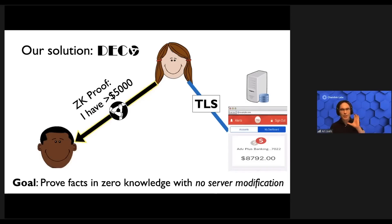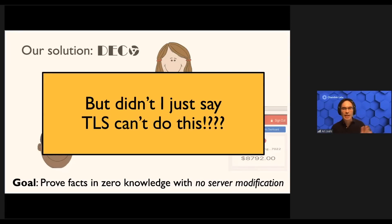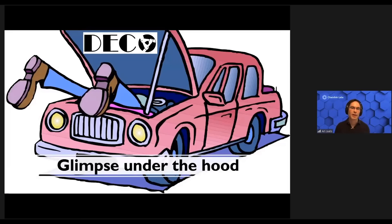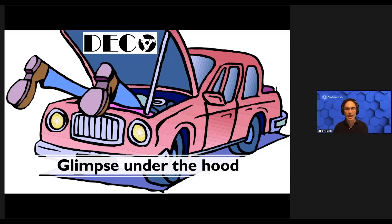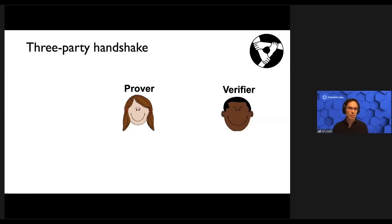But wait — didn't I just say that TLS can't do this? I did, but Deco sidesteps the limitations of TLS using some tricks I'll now explain. So let's take a glimpse under the hood of Deco. The key idea is something we call a three-party handshake. In explaining what that is, I'm going to refer to Alice and Bob alternatively as the prover and verifier, because those are the roles they'll be playing in the protocol.